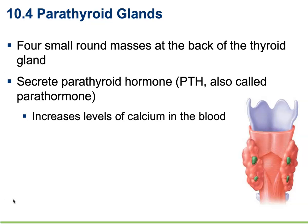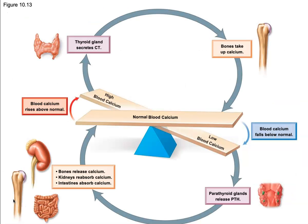Over-secretion of parathyroid hormone is going to pull calcium from bone tissue, causing weakened bones and elevated blood calcium levels. This could lead to kidney stones, calcium deposits in the soft tissue, and decreased activity of the nervous system. So we can see negative effects whether we're looking at over-secretion or under-secretion of parathyroid hormone.